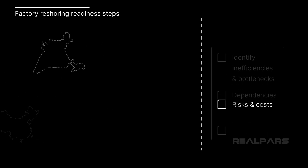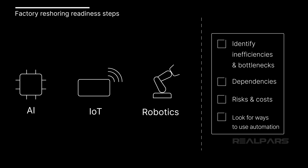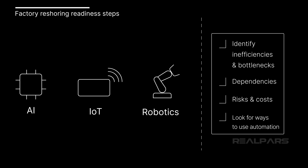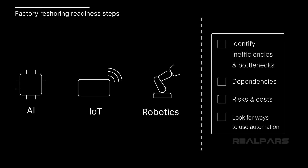The next step to make your factory reshoring ready is to determine the many ways that automation can make your operation more resilient and efficient. As discussed earlier, robotics, artificial intelligence, IoT, and data analytics can enhance reliability and efficiency and reduce costs.